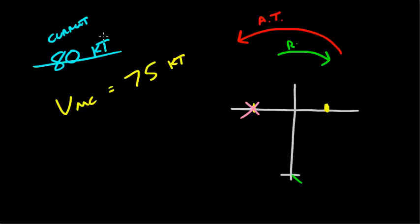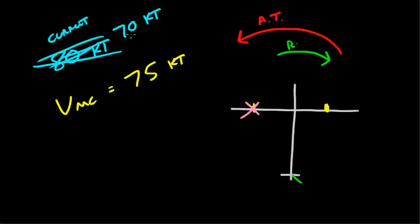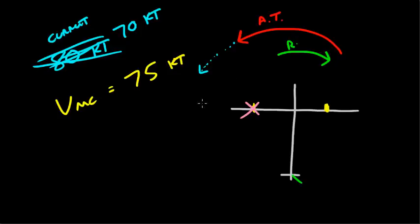Now let's say that you slow down. Let's say that your current speed is now 70 knots. Your VMC is still 75 knots, but your aircraft slows down to 70 knots. There is no longer enough airflow over the rudder for the rudder to have enough power to overcome the asymmetric thrust of the engine. For this reason, your engine is going to turn you to the left no matter how much rudder you use — even if you push the rudder pedal all the way to the floor, the asymmetric thrust from the working engine is still going to turn you, because the rudder will not be able to oppose it.